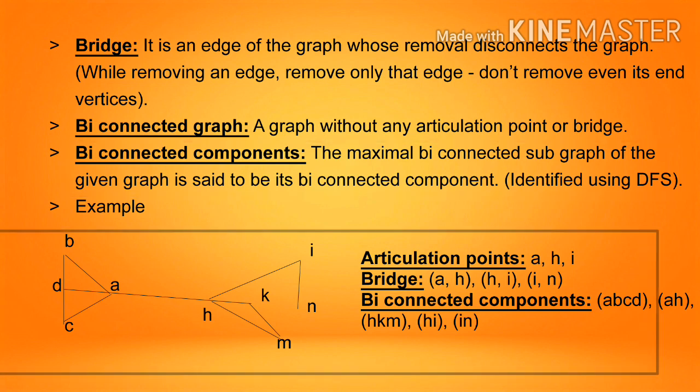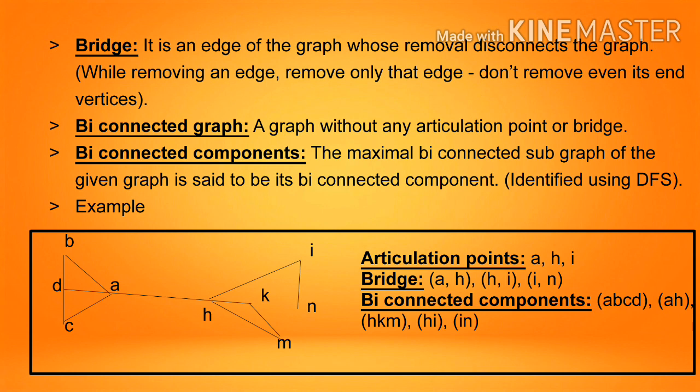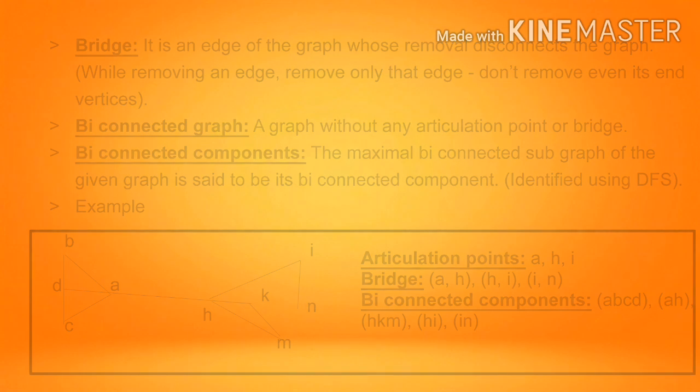Example: in the given graph, articulation points are A, H, I. Bridges are (A,H), (H,I), (I,N). Biconnected components are {A,B,C,D}, {A,H}, {H,K,M}, {H,I}, {I,N}.